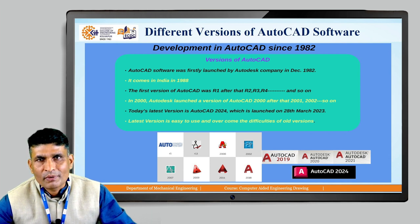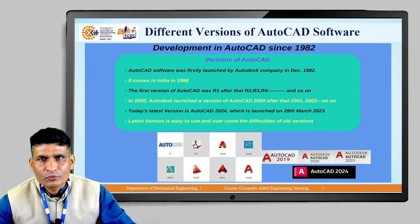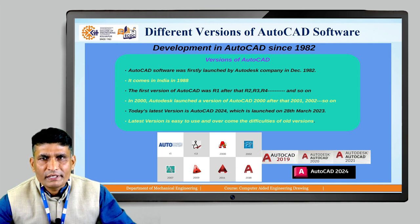AutoCAD software was first launched by Autodesk in December 1982 and commenced in India in 1988. The first version was Release 1, followed by R2, R3, R4, and so on. In 2000, Autodesk launched AutoCAD 2000, and subsequent versions continued yearly. The latest version is AutoCAD 2024, launched on 28th March 2023. The latest version is easier to use and overcomes difficulties of older versions.